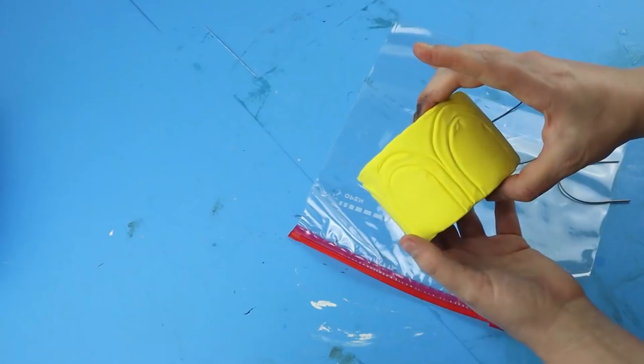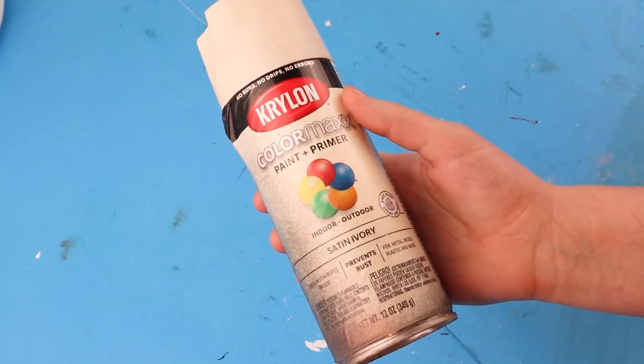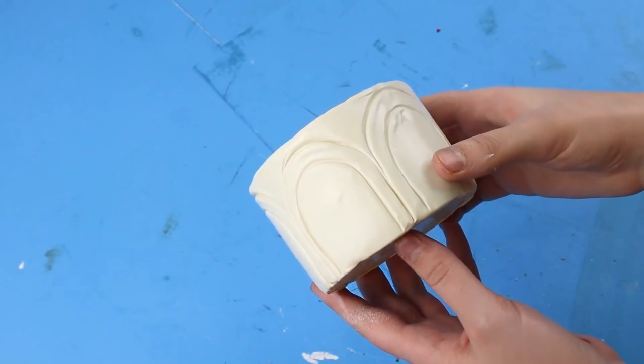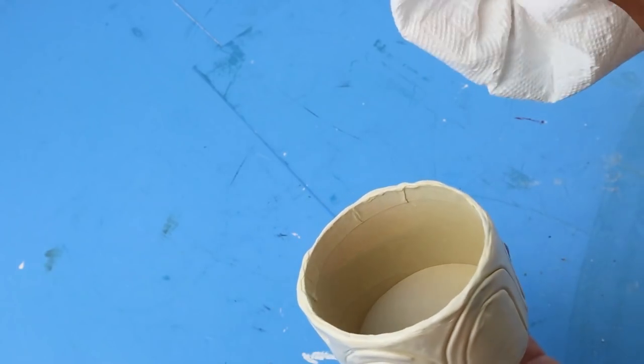When those were done I spray painted it with this satin ivory spray paint. I did want one that looked more like clay but this is all I had on hand. And this is how it looked after I spray painted it.